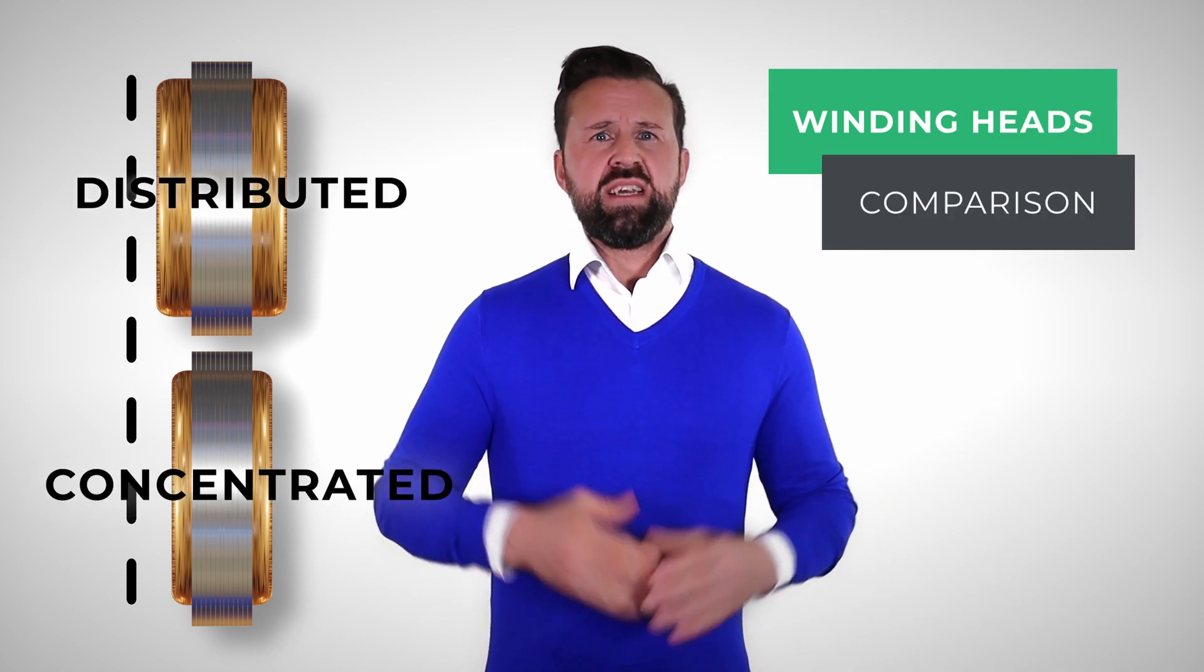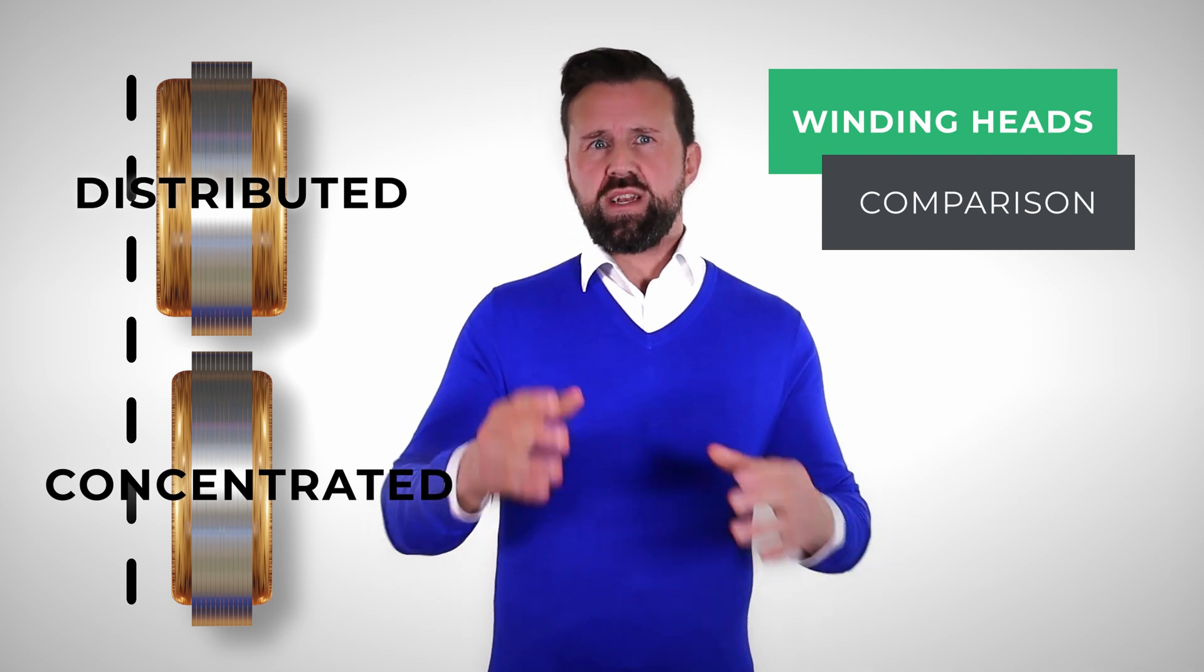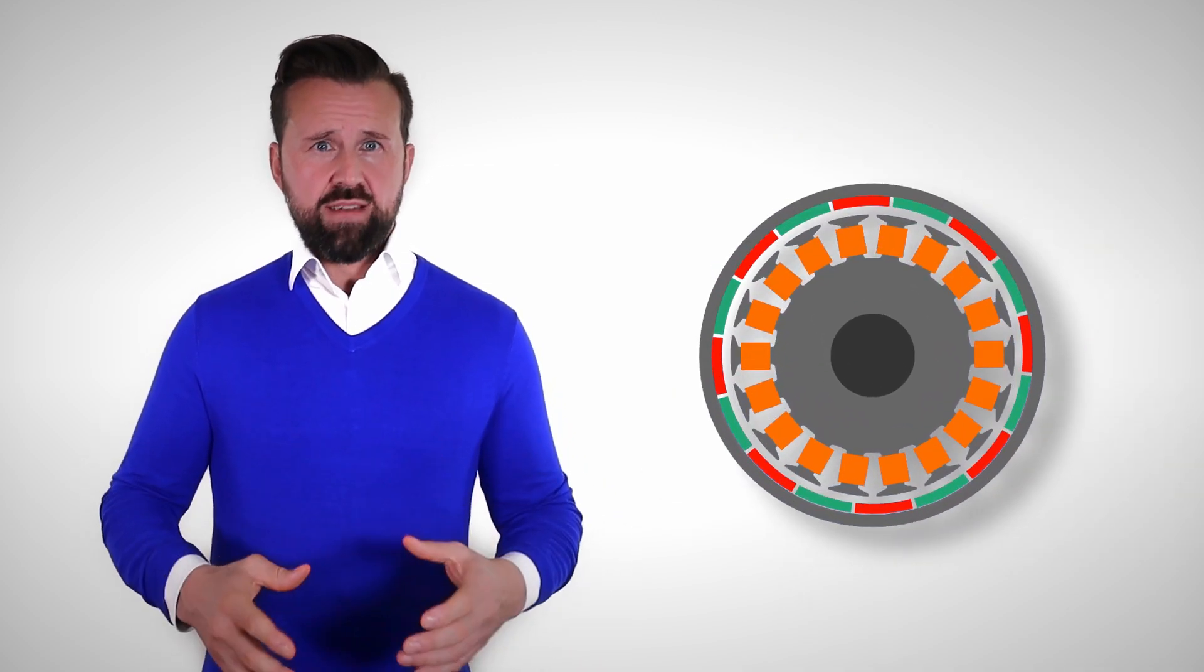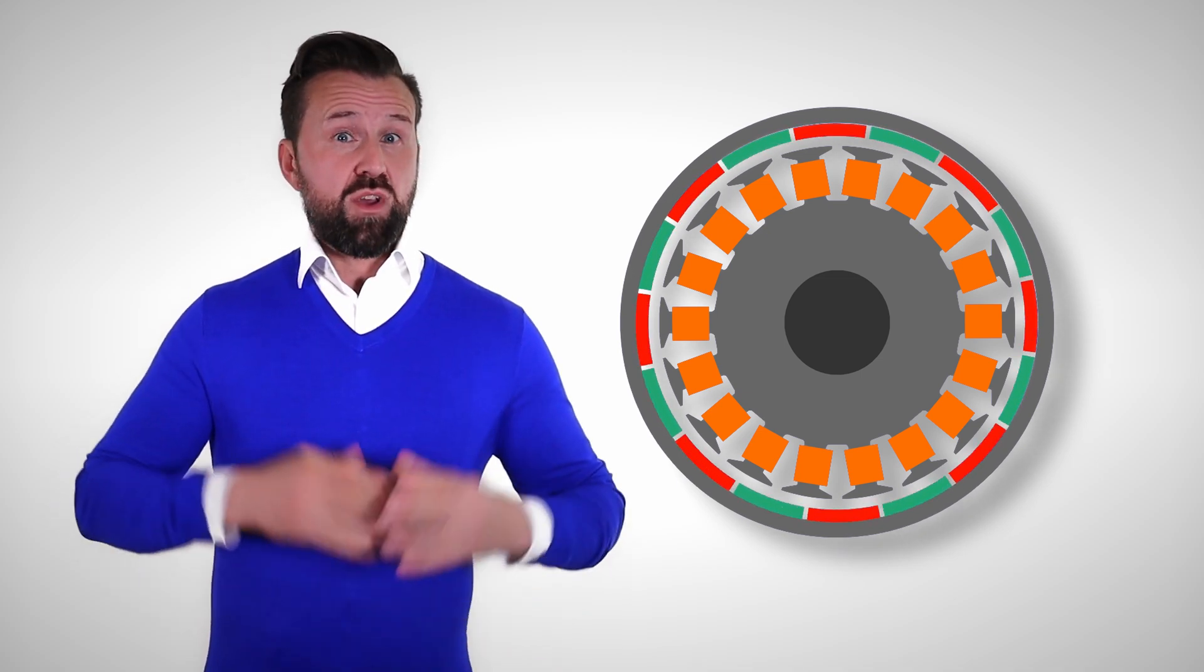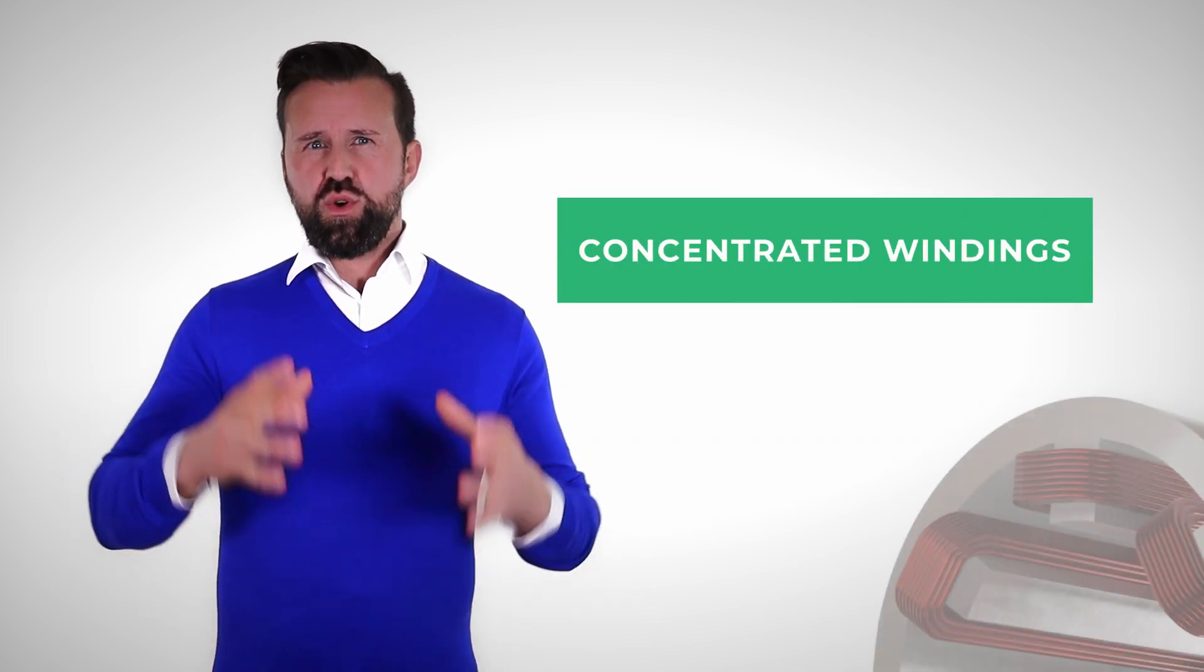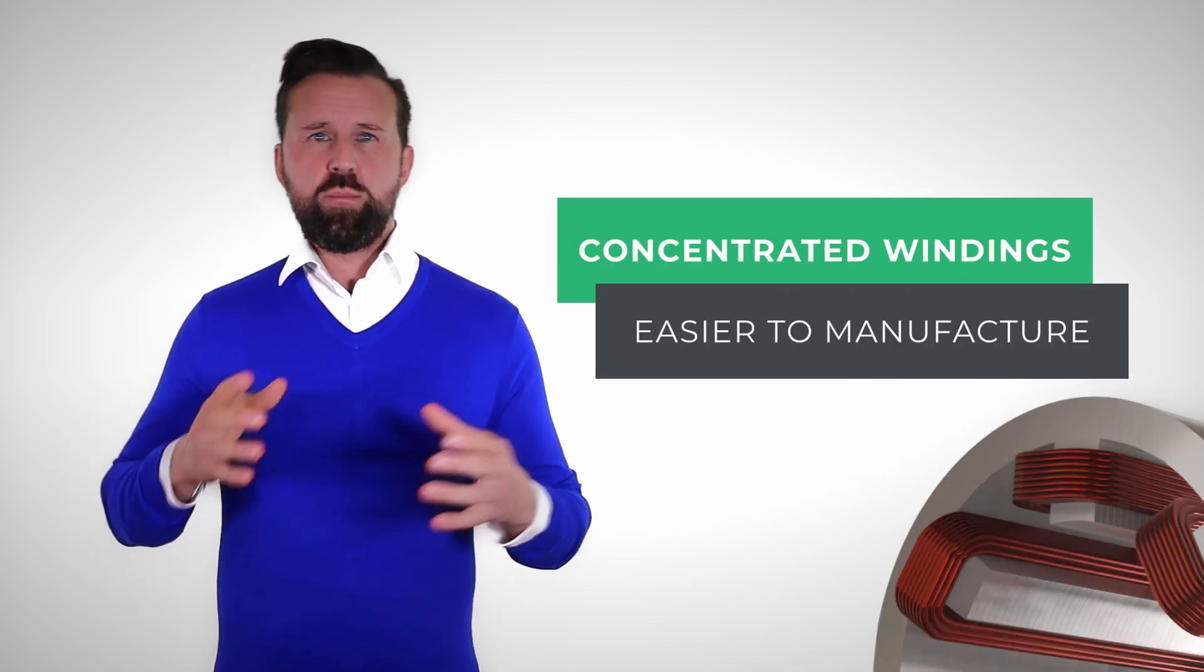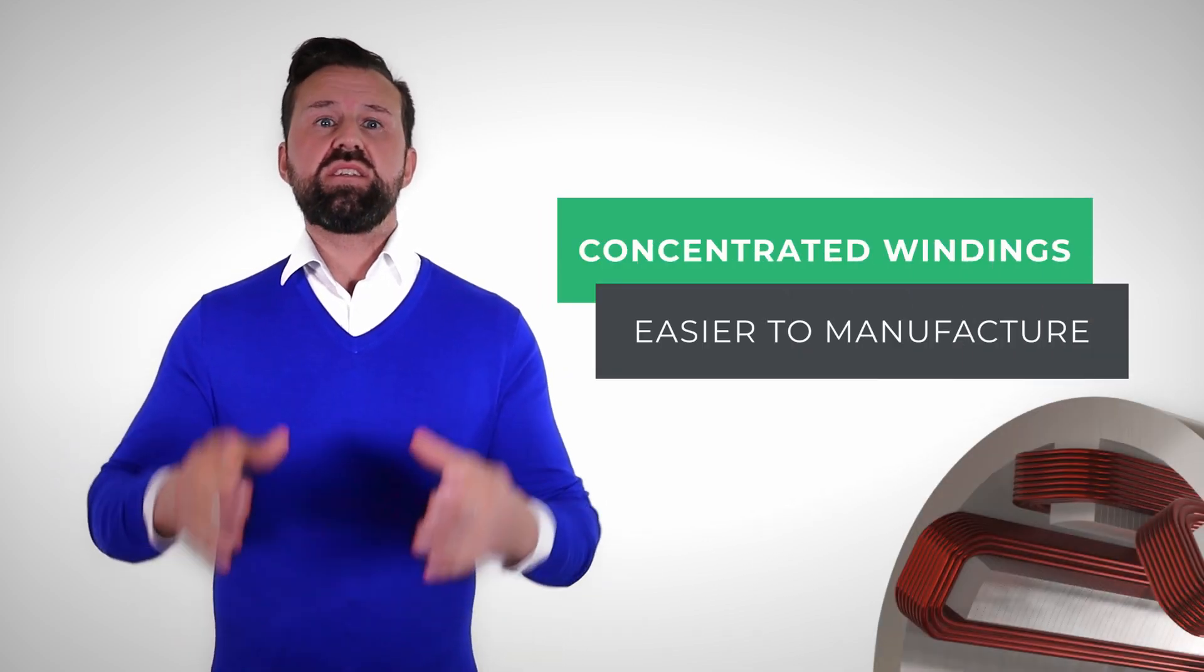Therefore, a concentrated winding is usually used for very short electrical motors. In this way, the ohmic losses from the winding head can be reduced. Wheel hub drives for bicycles are therefore almost always manufactured with concentrated windings, because they are short and have a large diameter. It is also easier and less expensive to manufacture a stator with a concentrated winding.